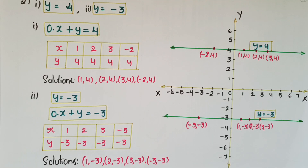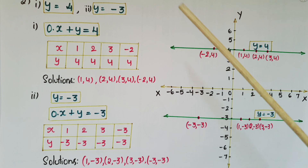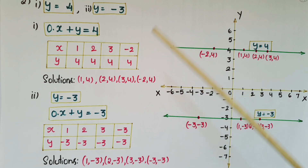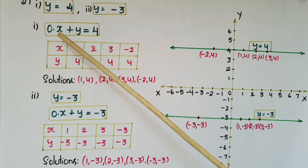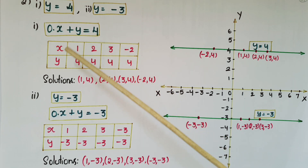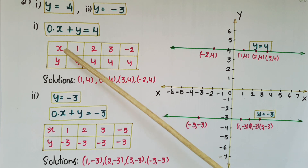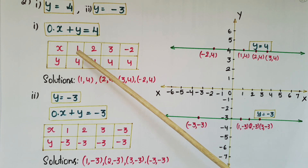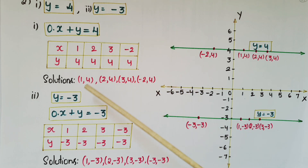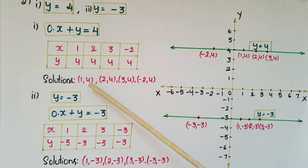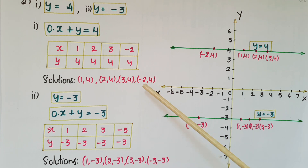Now I will show how to draw y = 4 and y = -3 on the graph. For y = 4, convert to ax + by + c = 0: that is 0·x + y = 4. Here the y-coordinate is always 4 and x can be any real number. I have taken x values 1, 2, 3, and -2, giving coordinates (1,4), (2,4), (3,4), and (-2,4).